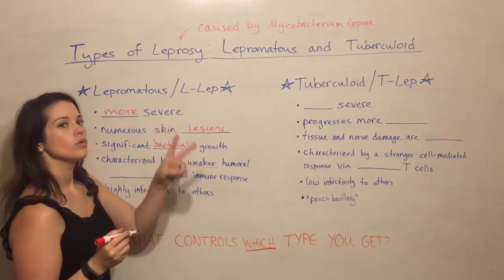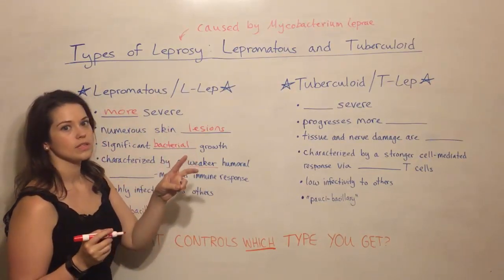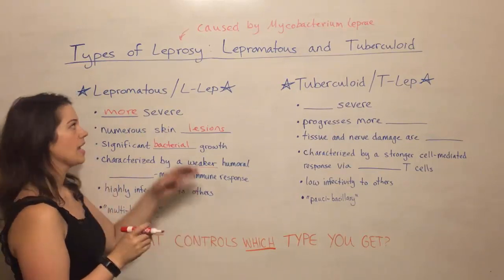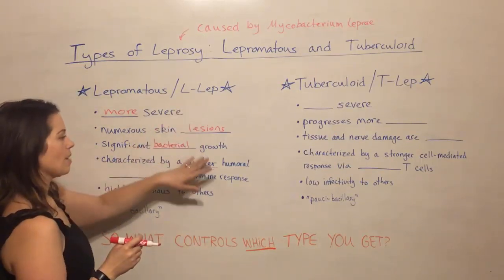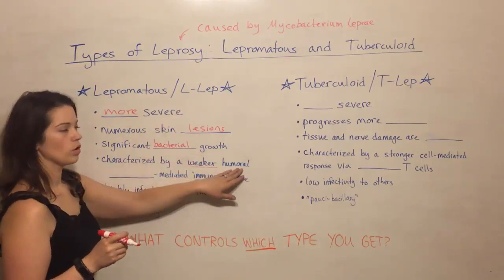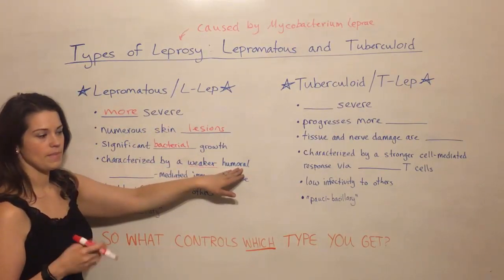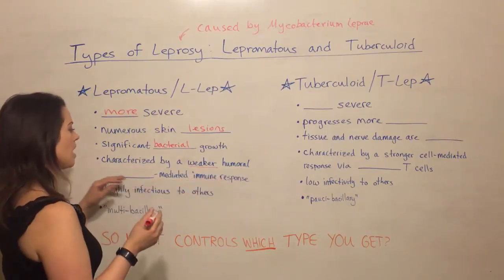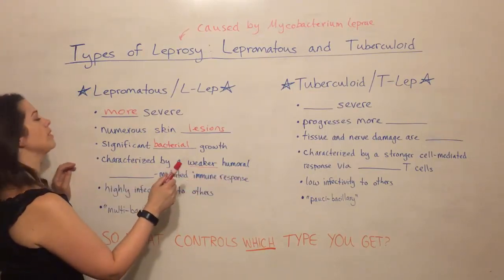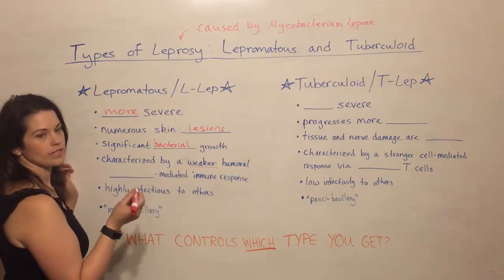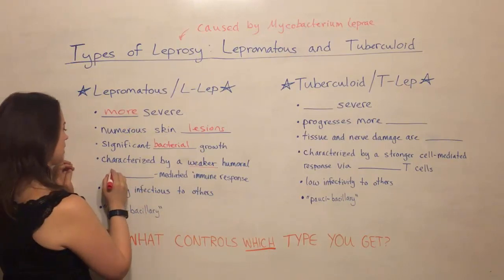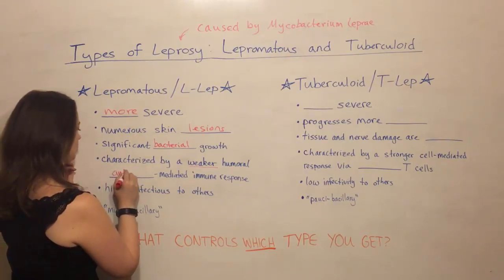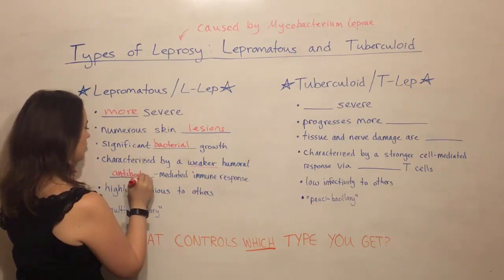Specifically, there are two arms of the immune system. One is known as humoral, one is known as cell-mediated, and in L-LEP it is the humoral immune response that is mainly trying to fight off this pathogen. When we say humoral, we're specifically referring to antibodies.